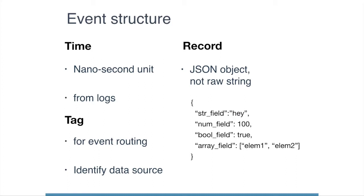A JSON object is easy to mutate, easy to filter, and easy to transform to other formats such as CSV or other binary formats. In addition, popular middlewares and recent web services can accept JSON objects natively. That is why Fluentd uses JSON objects for event records.